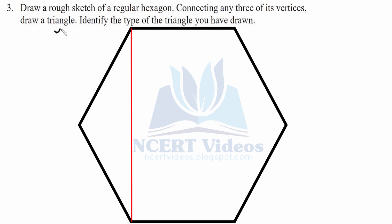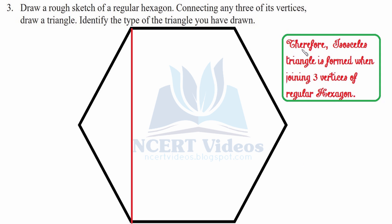When we identify the triangle formed, we see that two sides are equal because it is a regular hexagon, and the third side is not equal — this means it is an isosceles triangle, having two sides equal. These two equal angles confirm it. Remember: this works only for a regular hexagon; an irregular hexagon will not produce this result.